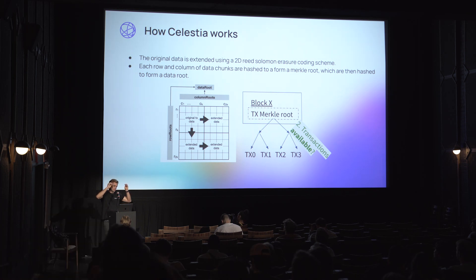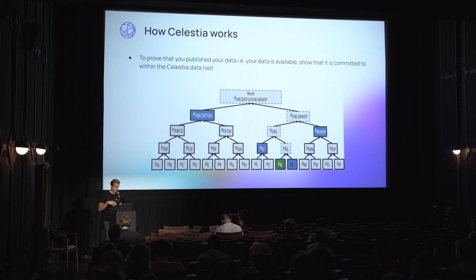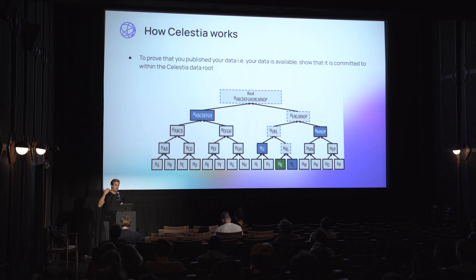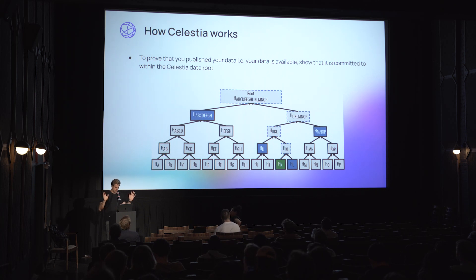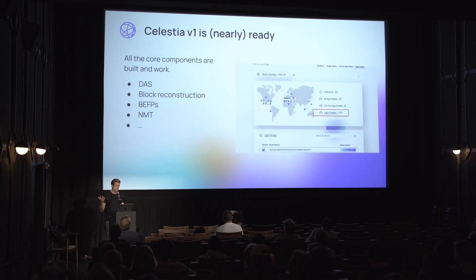Those row and column roots are then Merkleized into a top-level data root. So if you're a rollup trying to prove to a client that the data you published has actually been published, and they have sampled the Celestia block, all you need to show them is that your data was included somewhere within the data root. That's all the background you need to know about Celestia.